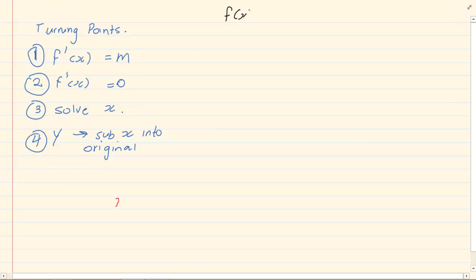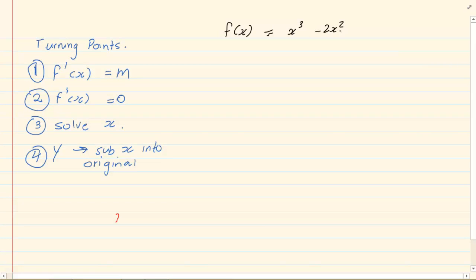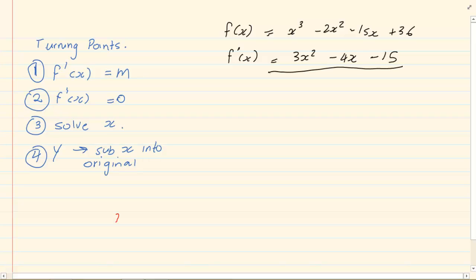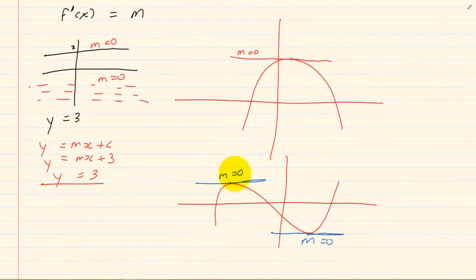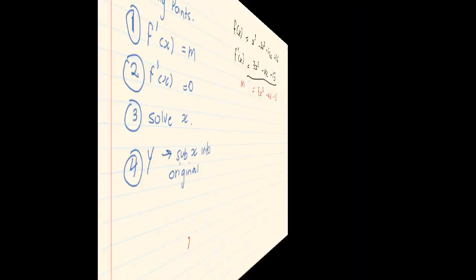Let us do the following equation: f of x is equal to x cubed minus 2x squared minus 15x plus 36. To get the turning points, first you are going to do the derivative. You are going to get 3x squared minus 4x minus 15. This gives us m. So we know m is equal to 3x squared minus 4x minus 15. But we also know that if m is equal to 0, then I am going to have a turning point. So we now make this equal to 0.